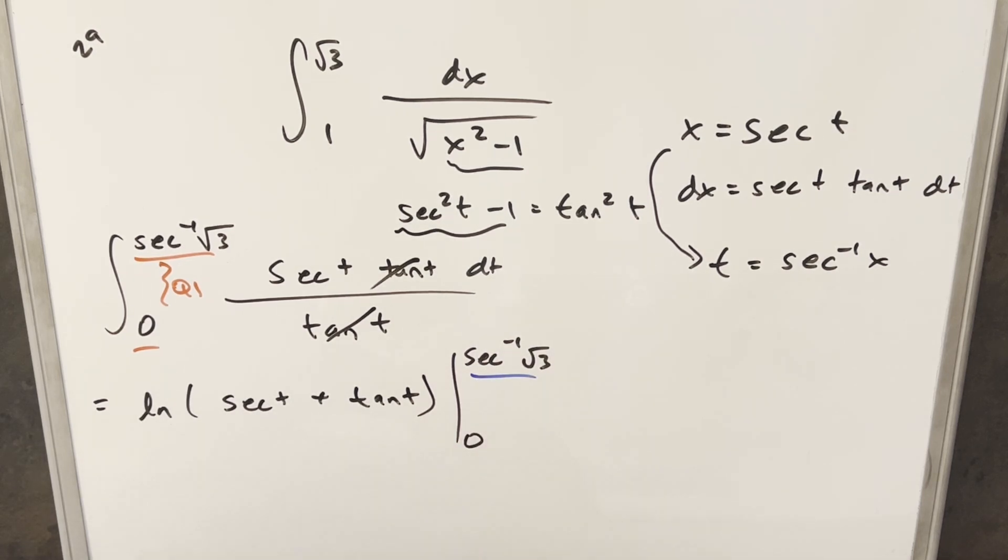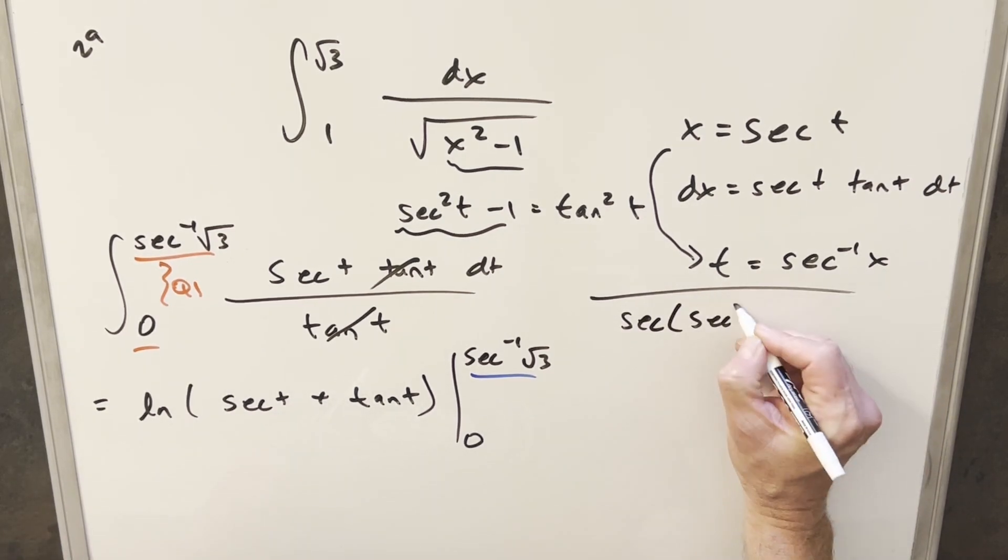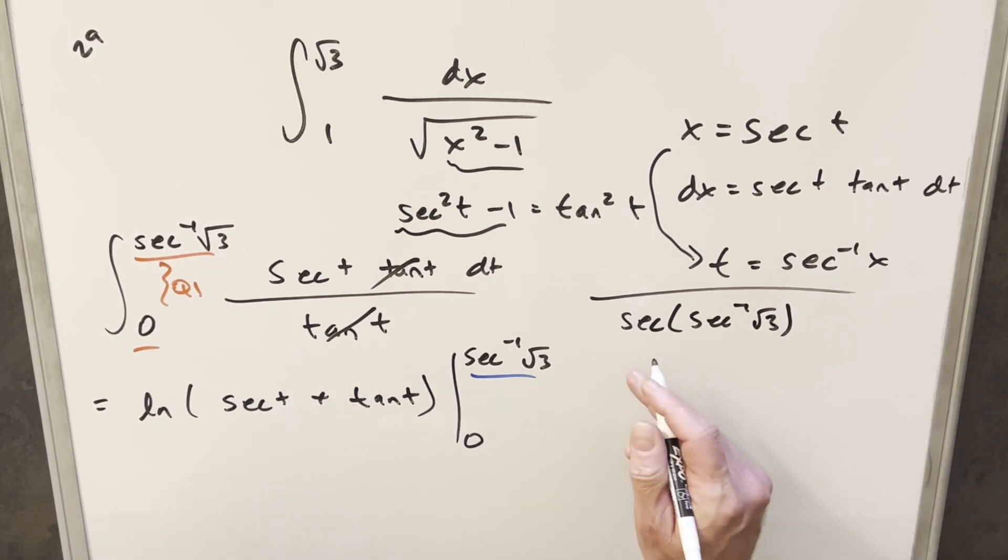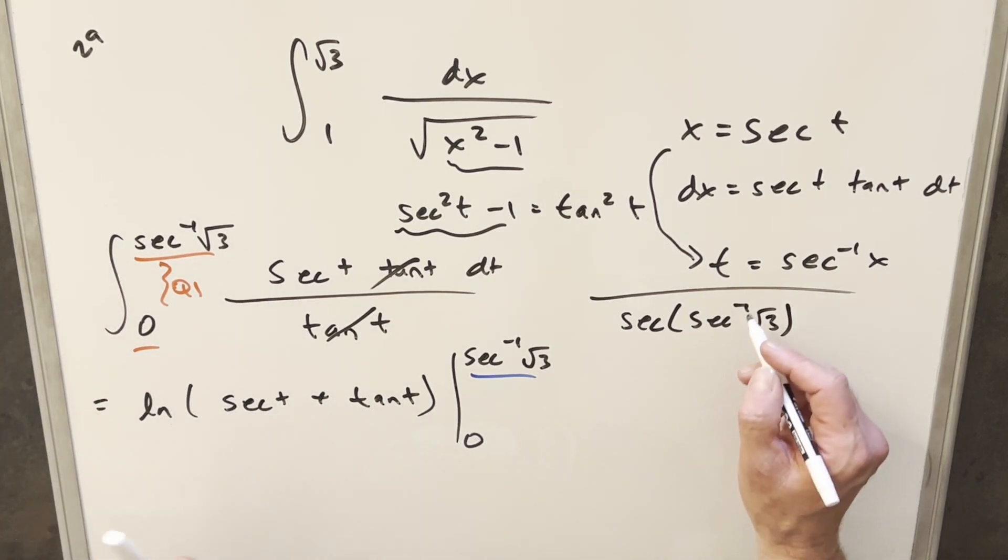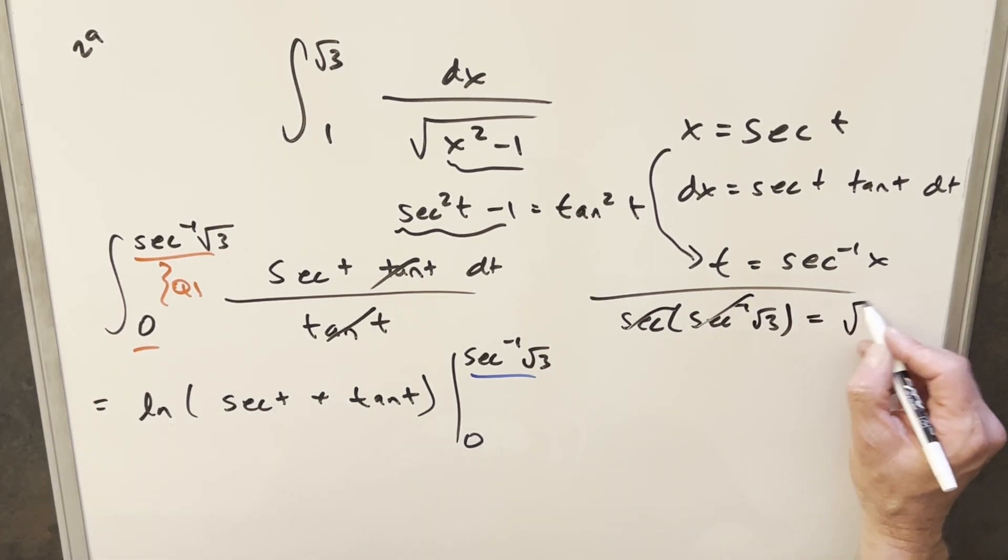Now first, let's look what happens when we evaluate this upper bound. Now we're going to end up here, this is going to be plugging into secant, this is going to be secant of secant inverse square root of 3. Well again, because we're in the first quadrant, we can actually just kind of cancel these, and this value is actually just going to be square root of 3.